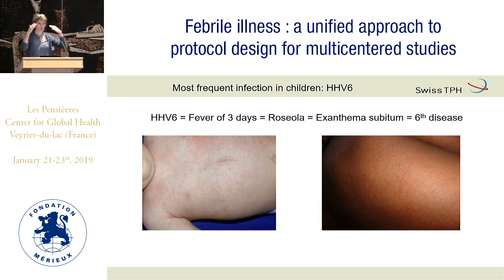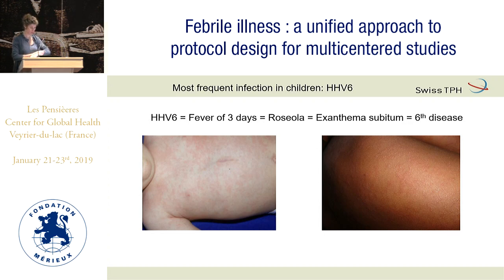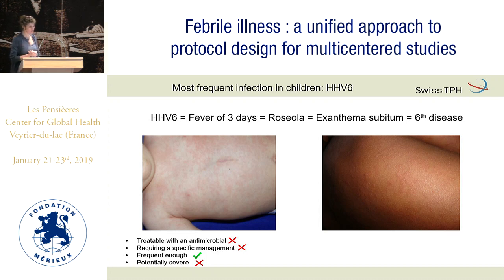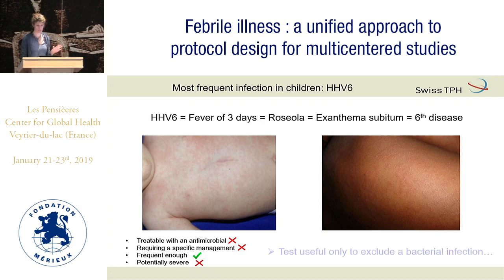Taking infections one by one from the Tanzanian data: number one in children is HHV-6, which we call 'fever of three days' in Switzerland — roseola, or the sixth disease. It gives fever with a very faint rash that you probably miss on dark skin. Using our criteria: treatable with antimicrobial? No. Specific management? No. Frequent enough? Yes — it's number one. Potentially severe? No. Only one of four criteria — probably we forget about this infection, except that testing would allow us to stop looking for anything else and avoid giving antibiotics.